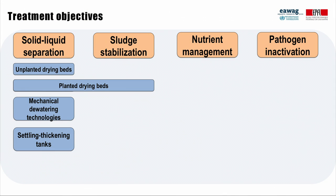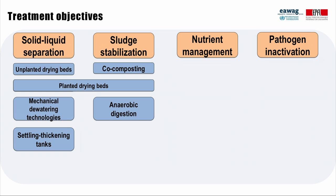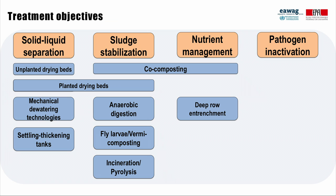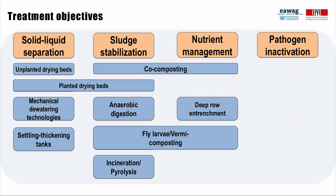Other treatment technologies for sludge stabilization include co-composting, anaerobic digestion, fly larvae and vermicomposting, and incineration and pyrolysis. Technologies for nutrient management can include co-composting, deep row entrenchment, and fly larvae and vermicomposting.